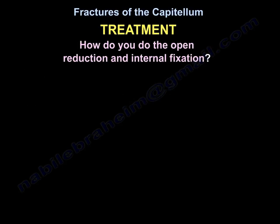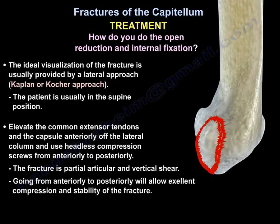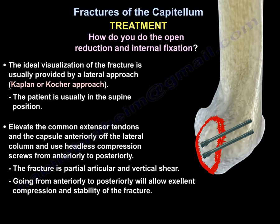For open reduction and internal fixation, the ideal visualization is provided by a lateral approach — the Kaplan or Kocher approach — with the patient in the supine position. Elevate the common extensor tendons and capsule anteriorly off the lateral column, and use headless compression screws placed from anteriorly to posteriorly, as the fracture is partial articular and a vertical shear pattern.